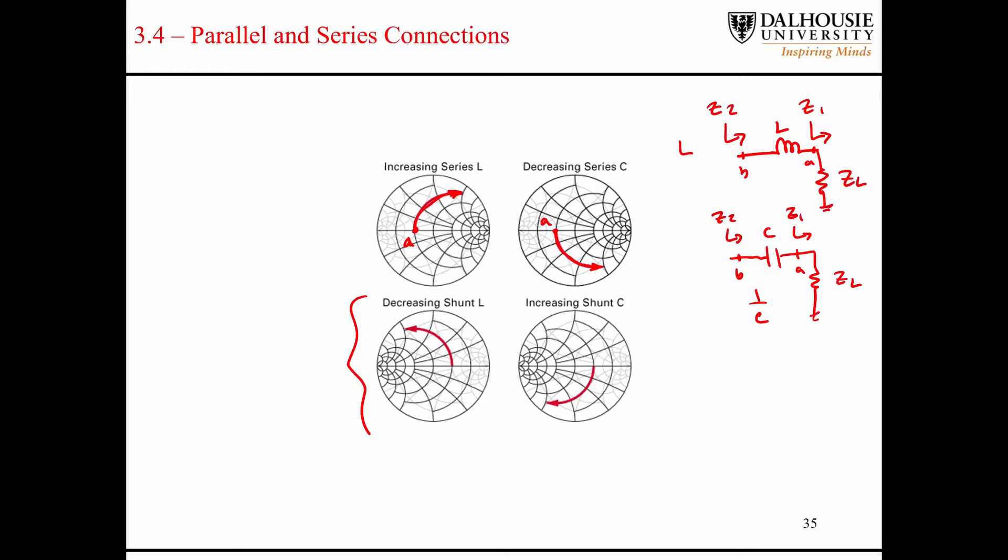These explanations on the bottom refer to cases where you have a load with a shunt or parallel inductor. This time you rotate on curves of constant conductance, and it's the opposite. As the inductor value decreases, you rotate counterclockwise on the circles of constant conductance.